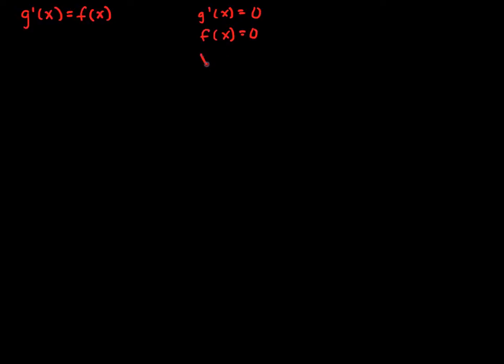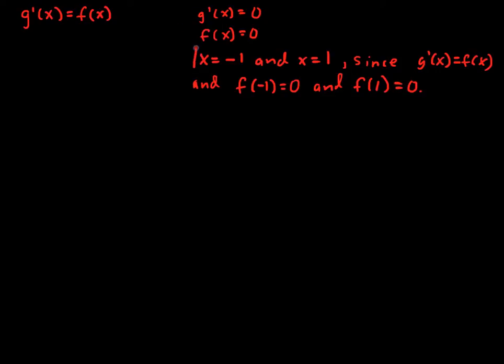So x equals negative 1 and x equals 1, since g prime of x equals f of x, and f of negative 1 equals 0, and f of positive 1 equals 0. That's a lot of ands, but I think it's grammatical right there, so I'll leave it. But here are the two values.